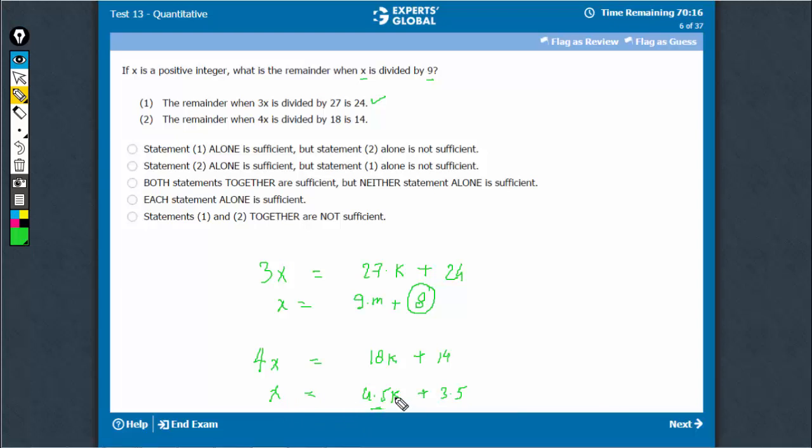The remainder here would be different depending on the value of k. What we can say, however, is that 2x leaves remainder 7 with 9. For example, a number like 9 plus 7, 16. 2x is equal to 9 plus 7, 16.